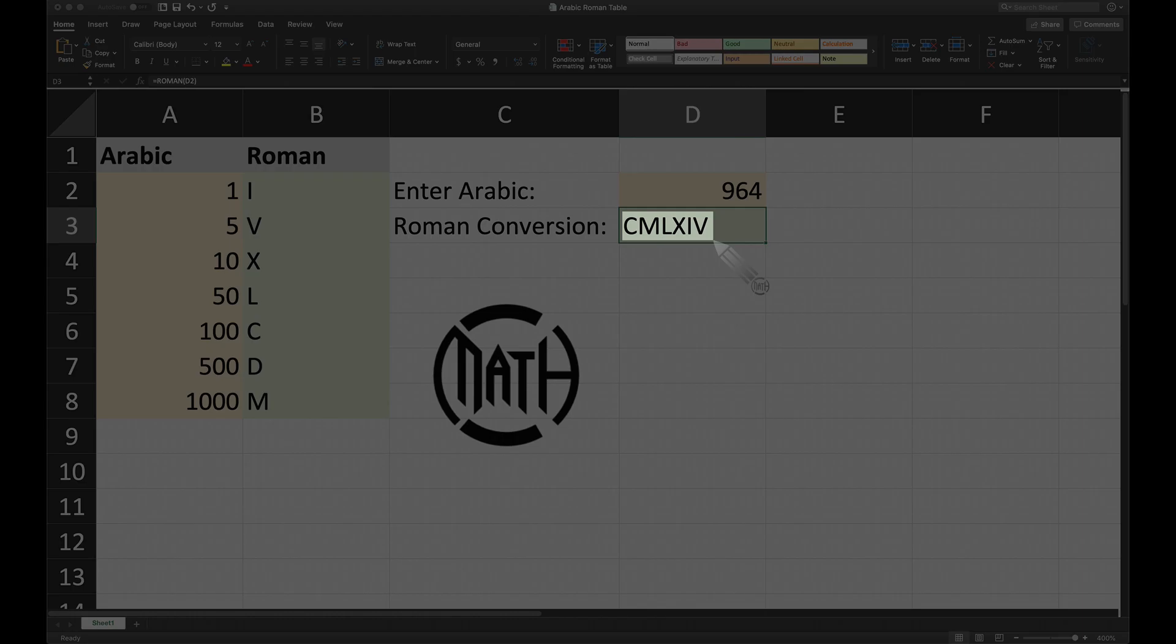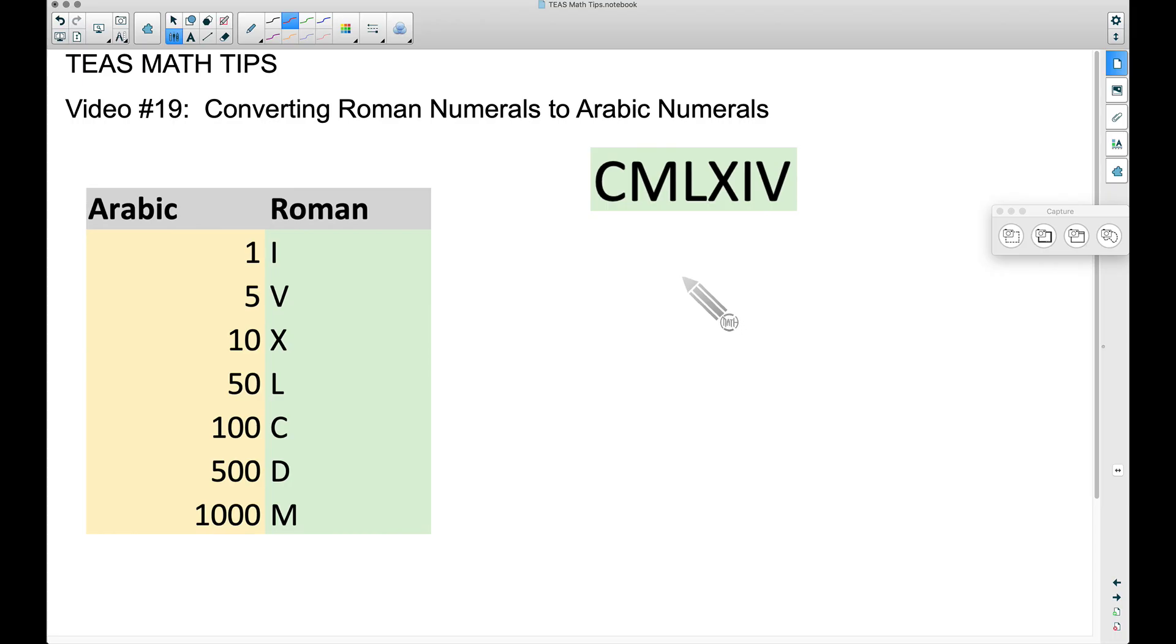Look at this number right here - this is the one that I want to show you how to convert. Here's what I do when I have a Roman numeral and I need to convert it to an Arabic numeral. I go ahead and take all of my letters and I write down what number they represent. So the C is going to be 100, the M is 1000, the L is 50, X is 10, the tally is 1, and the V is 5.